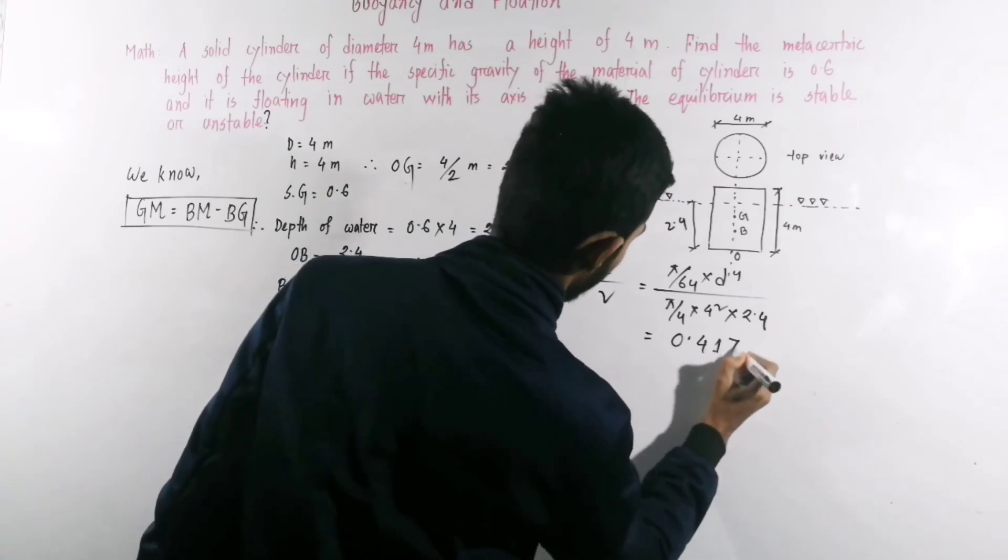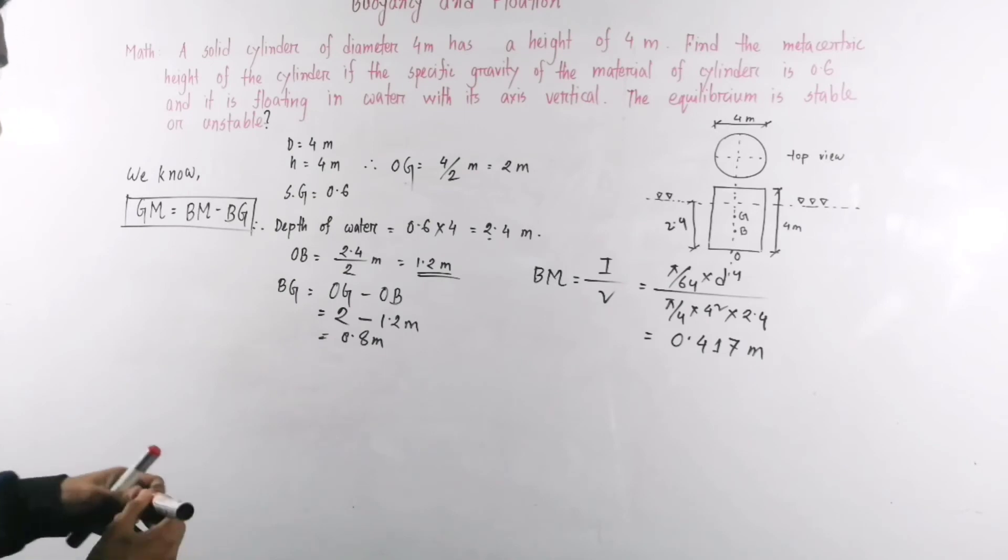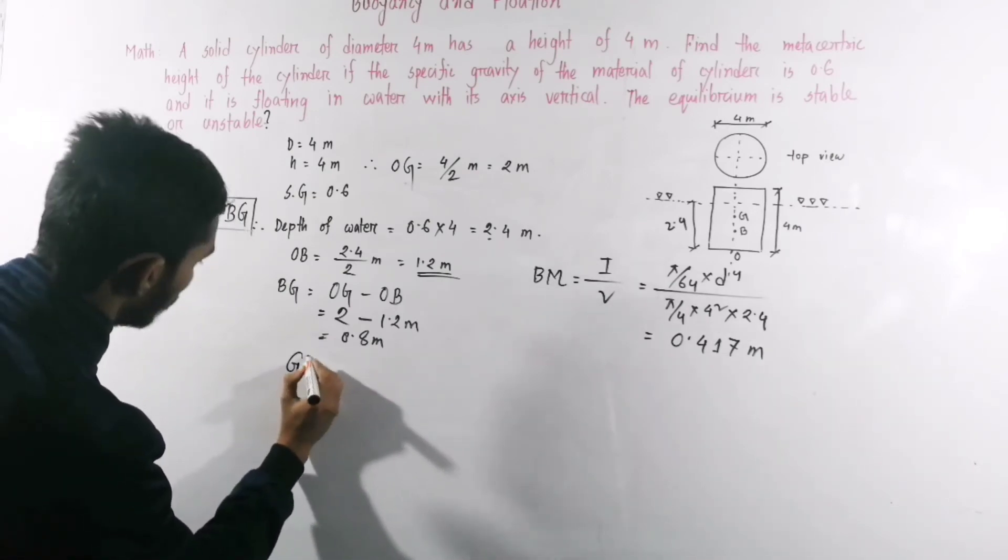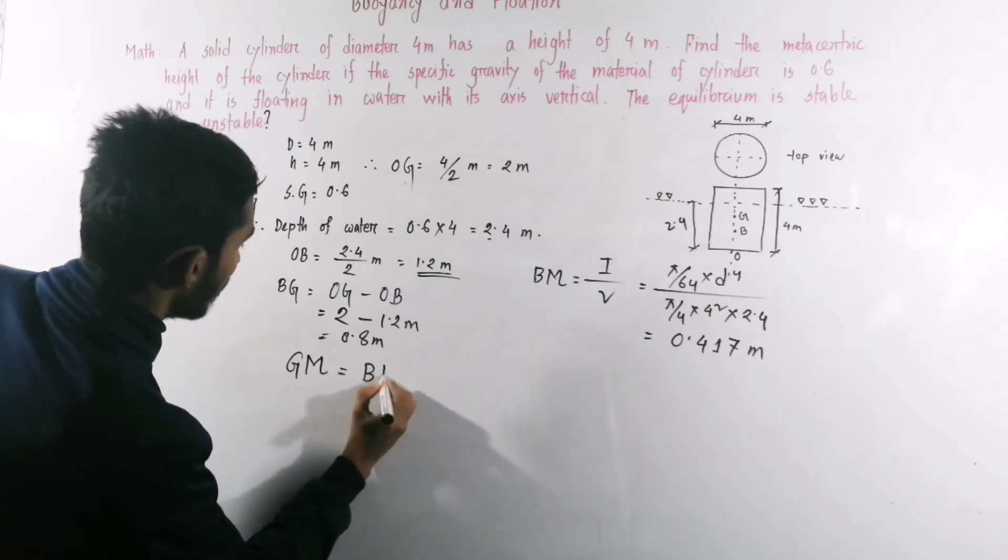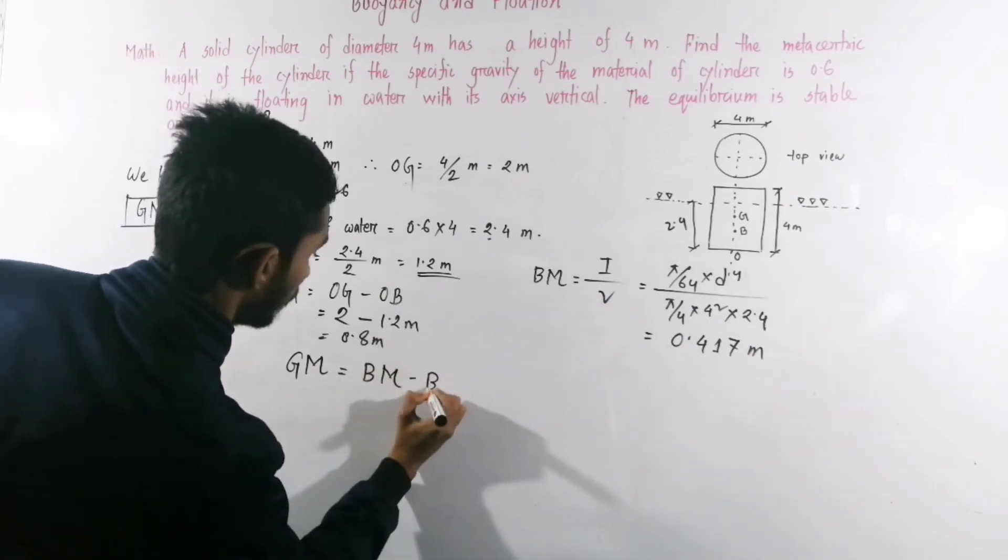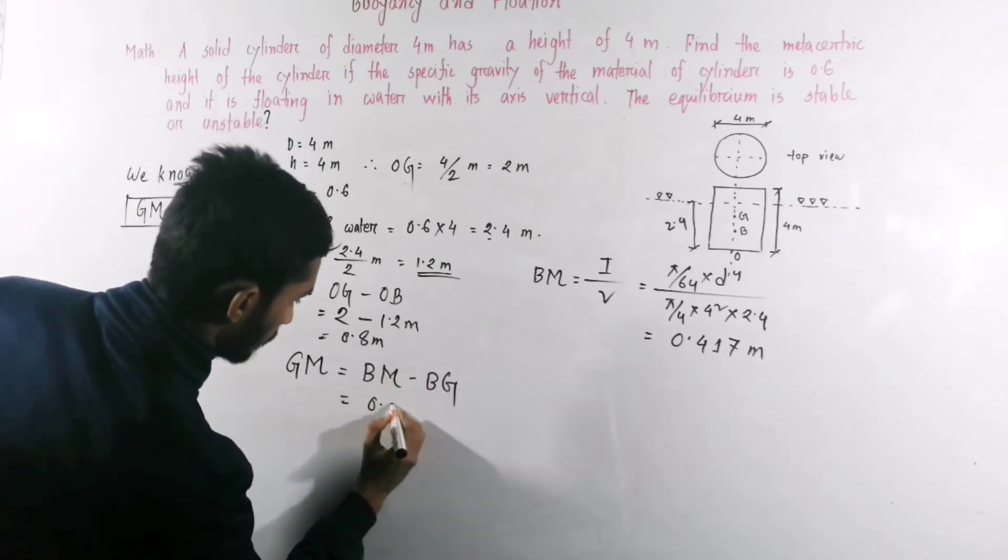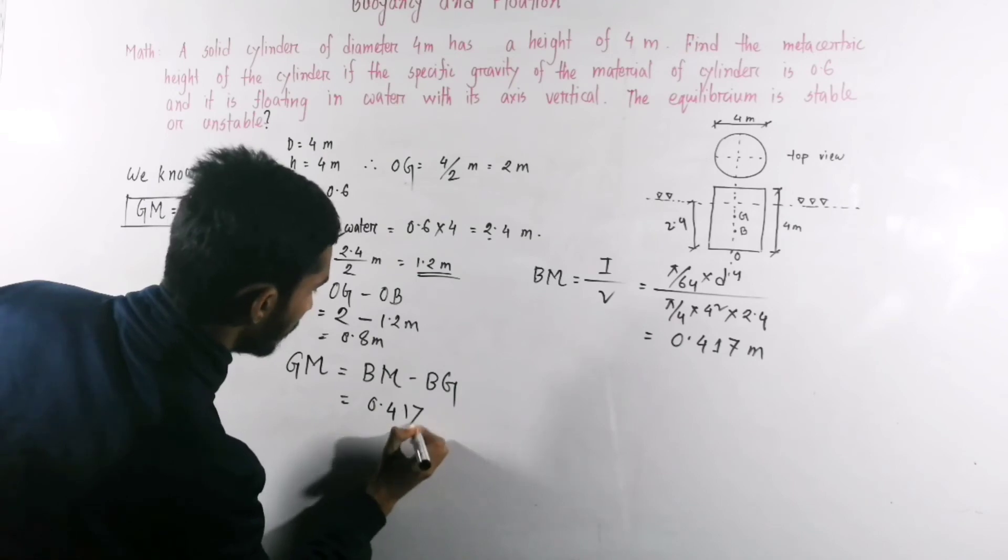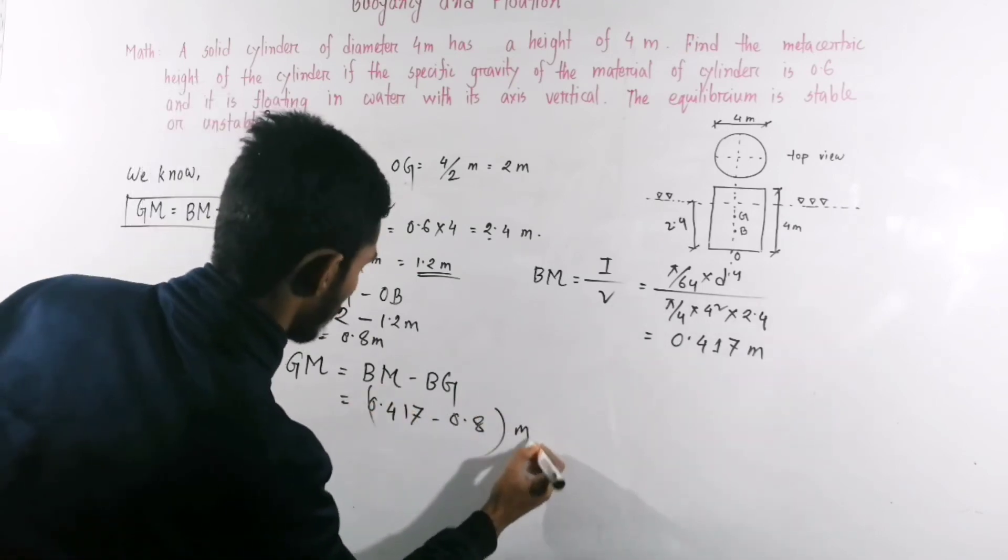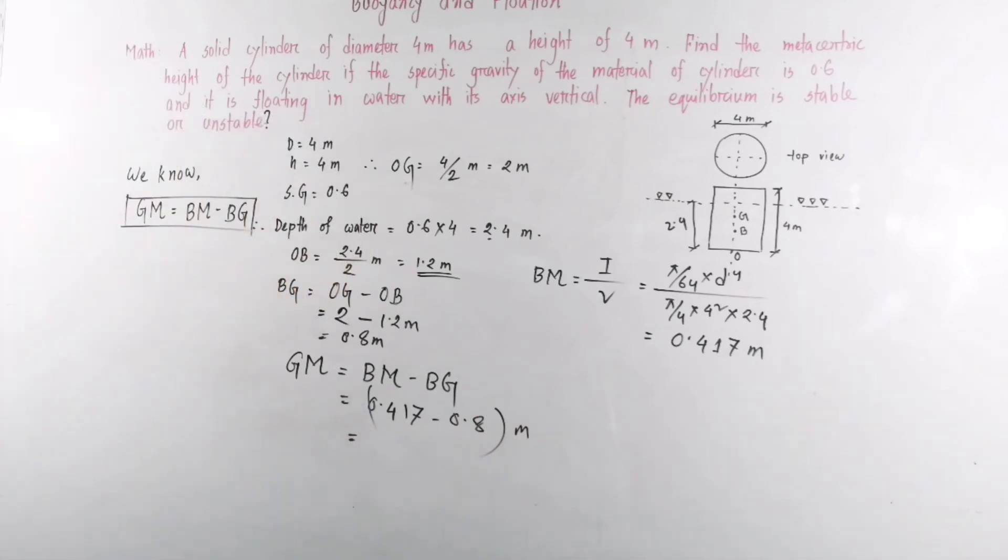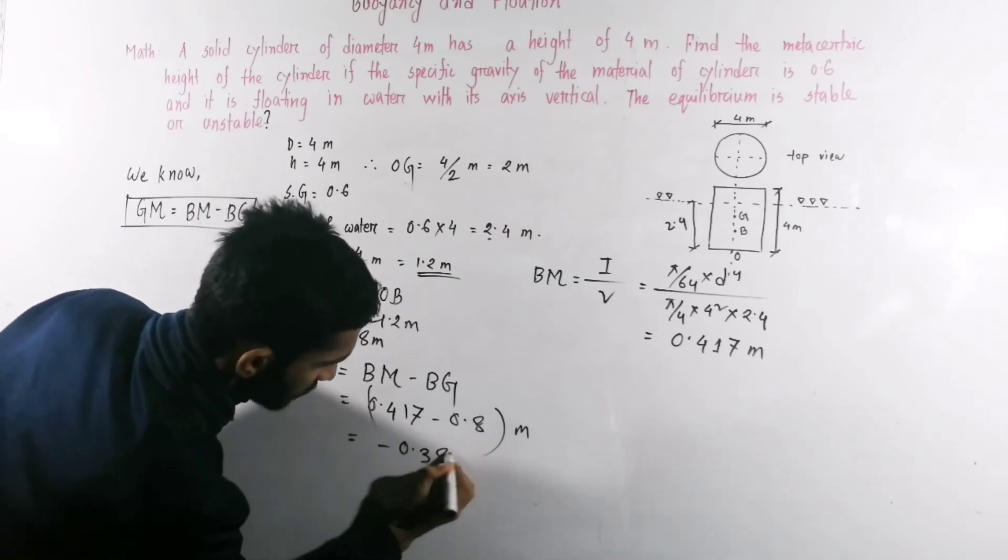OK, so GM, metacentric height equal to BM minus BG. BM was 0.417 minus 0.8. So GM is minus 0.383 meter.